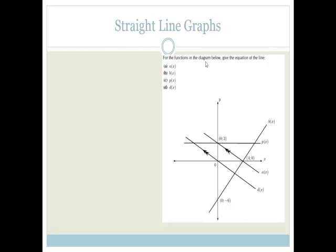The first one we're looking at are straight line graphs. To cover it all, I've decided to show you this question where it says: for the functions diagram, give the equation of the line for a(x), b(x), p(x), and d(x). So let's have a look. First of all, let's look for a(x). A(x) is this line here.